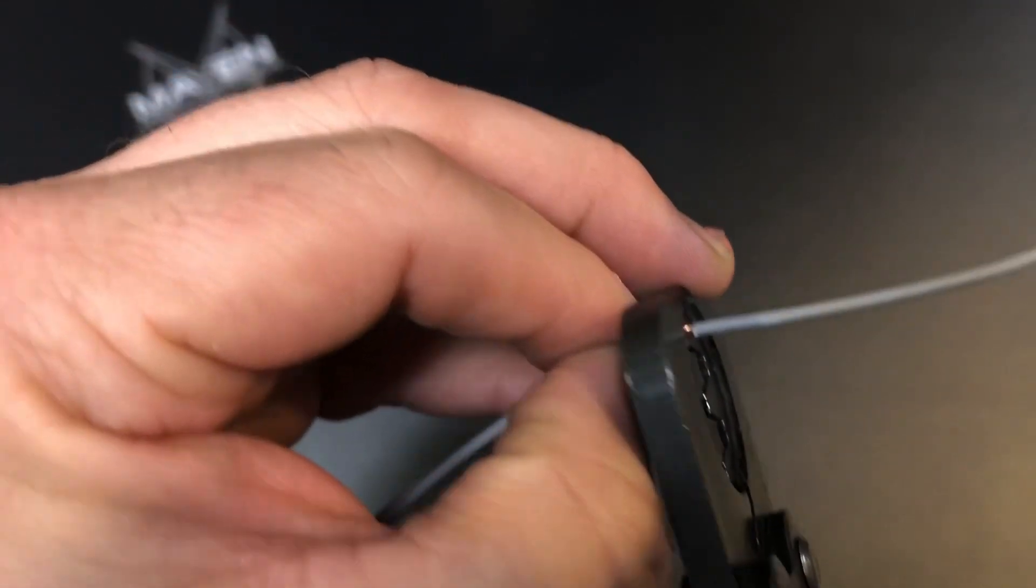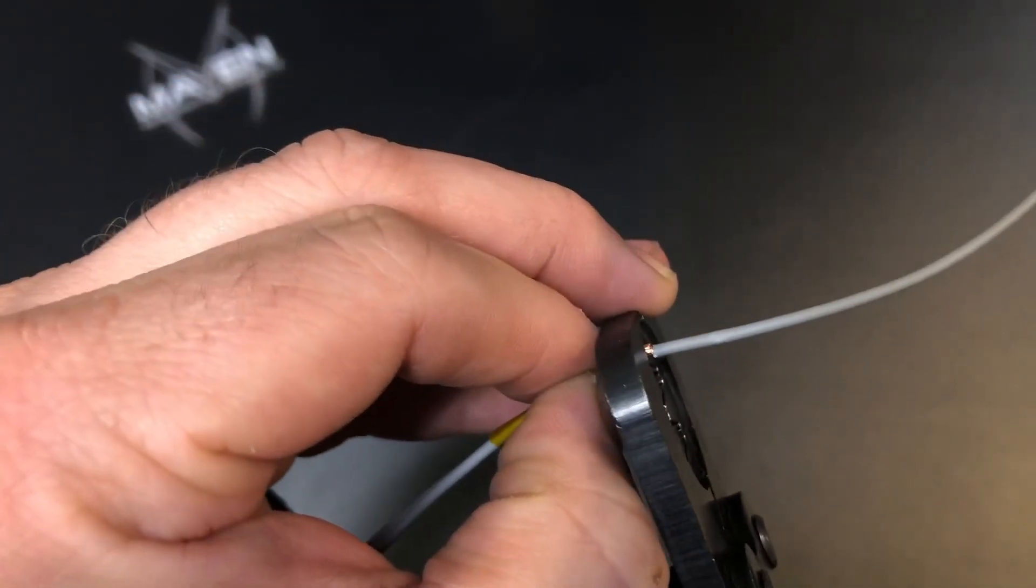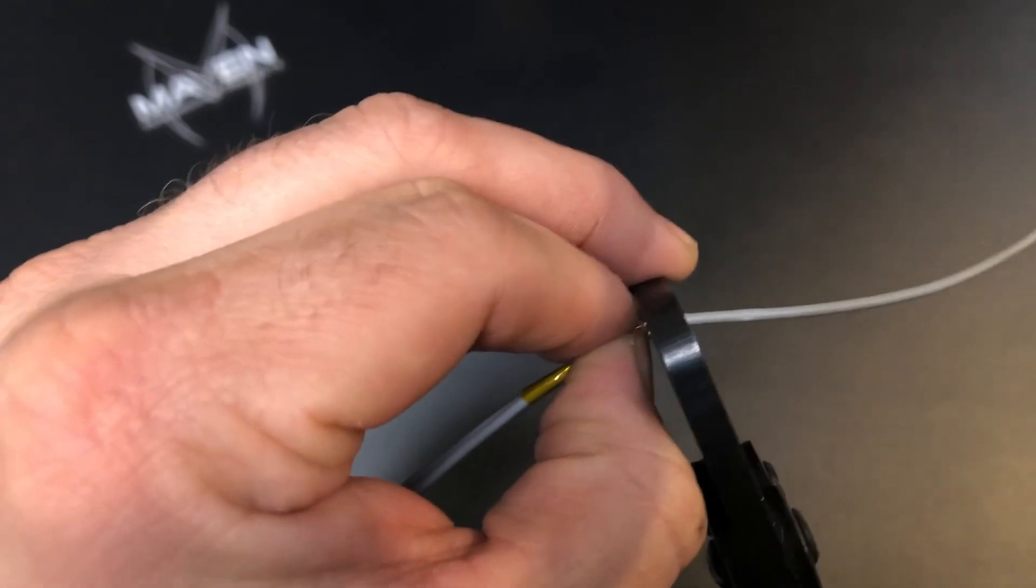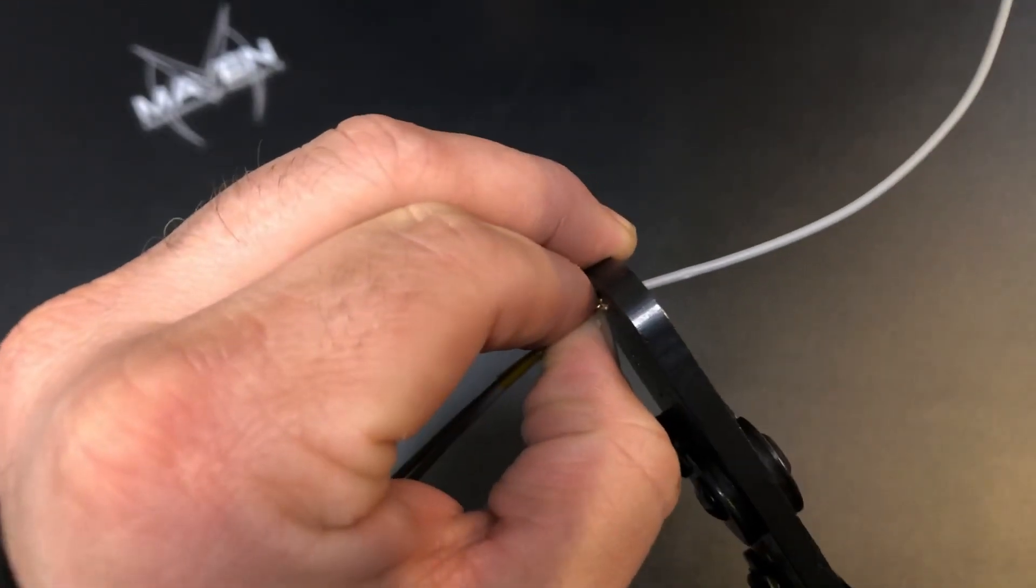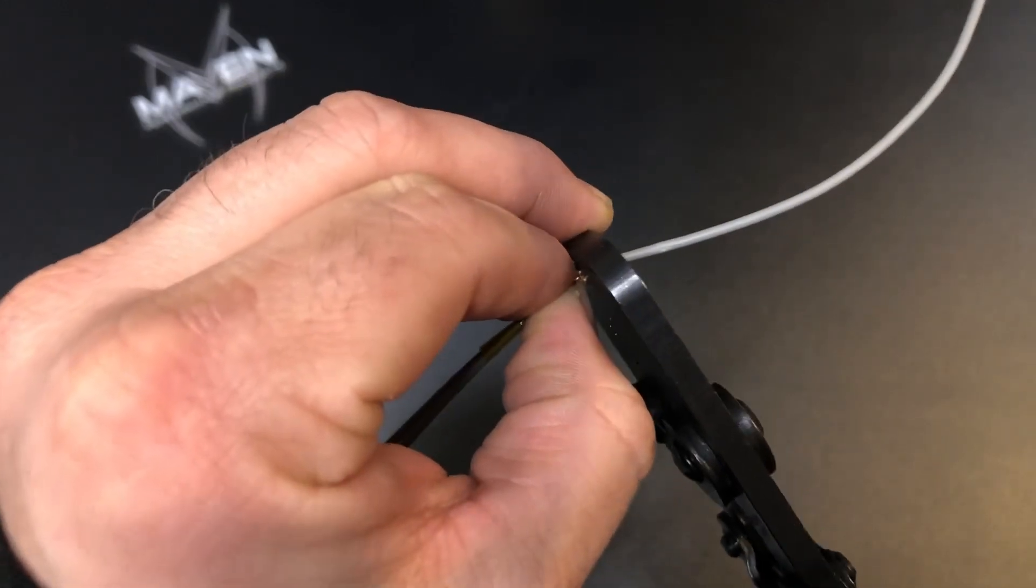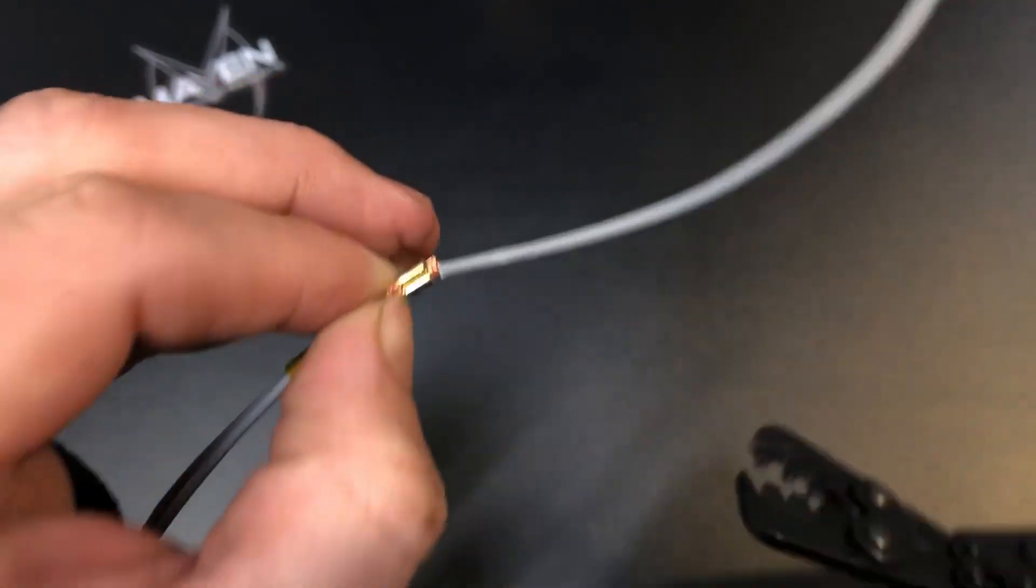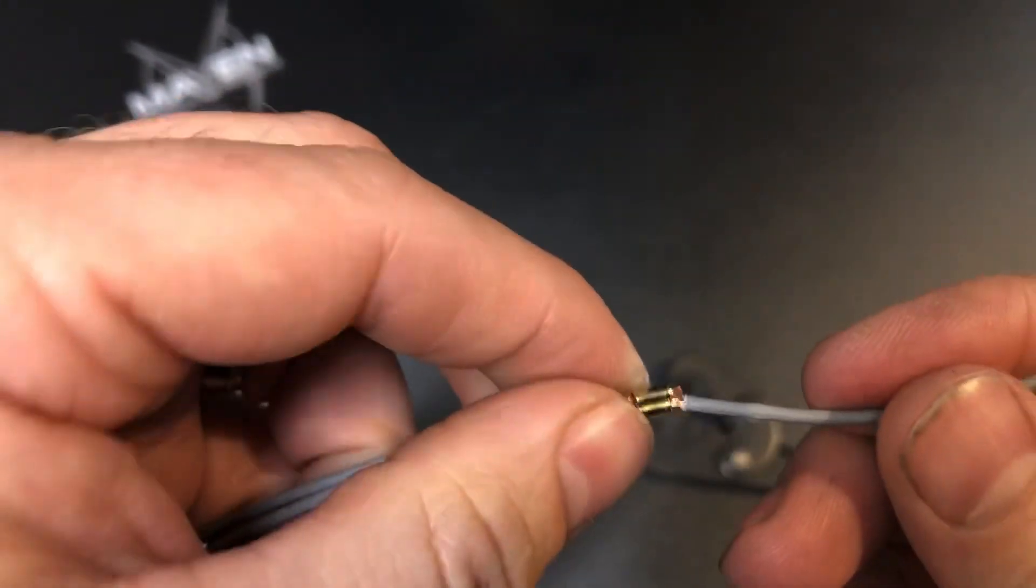Then we want to—with these crimpers, you just go ahead and crimp them until you can't crimp anymore. You should be hitting the bottom of the stroke here, and then it'll release the ratcheting. We'll see how well we did.